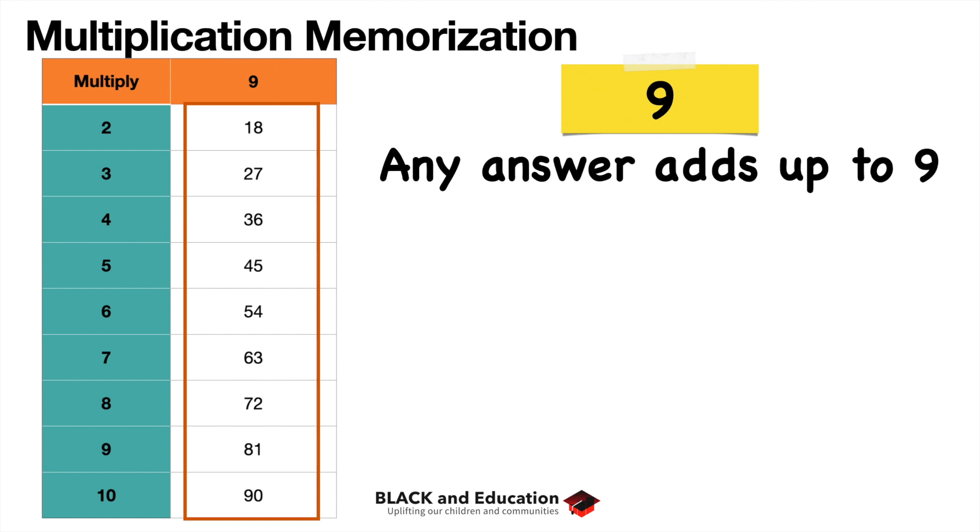Any answer we get when we multiply a number by 9 is going to add up to 9. Let's take a look at that. Let's say 9 times 2. Well, 9 times 2 is 18. And if you take that 1 and 8, that 1 and 8 is going to equal 9. If you get an answer when you multiply 9 in a multiplication problem and the answer does not add up to 9, then you probably got it wrong.